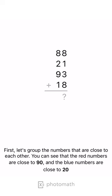First, let's group the numbers that are close to each other. You can see that the red numbers are close to 90, and the blue numbers are close to 20.